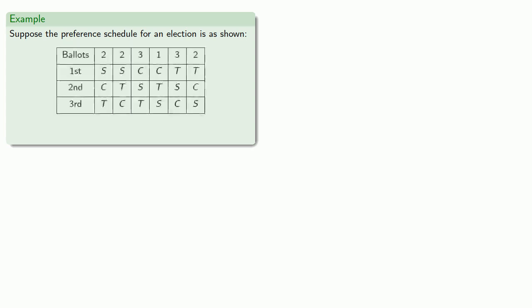Suppose the preference schedule for an election is as shown, and if the election were to be decided by plurality, how should voters vote? To answer that question, we need to know how the election turned out, and we see that using plurality, T wins.